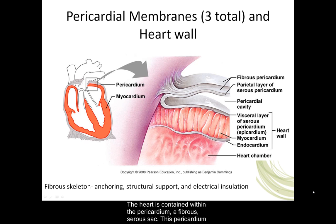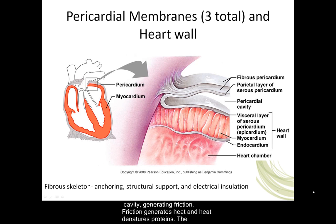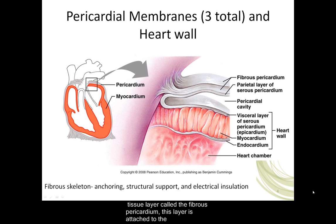The heart is contained within the pericardium, a fibrous serous sac. This pericardium restricts heart movement so it doesn't bounce around and move about in the thoracic cavity, generating friction. Friction generates heat, and heat denatures proteins. The pericardium is composed of two parts. The outer portion is a tough, dense connective tissue layer called the fibrous pericardium. This layer is attached to the diaphragm and the base of the heart.